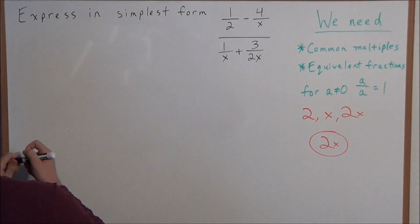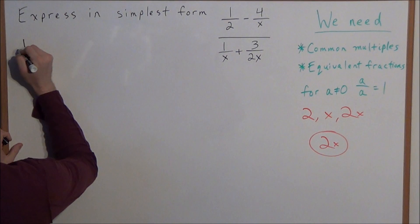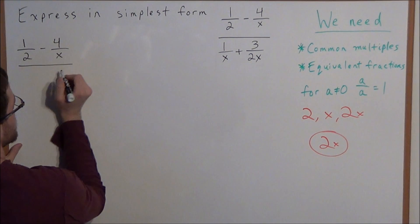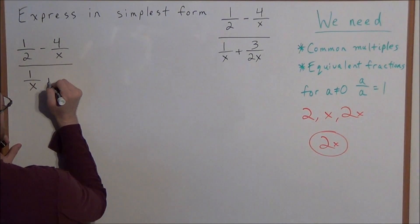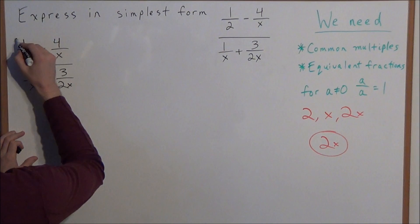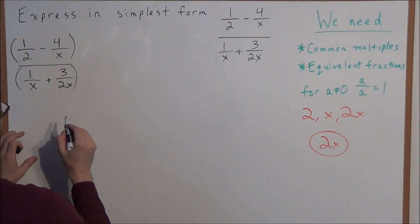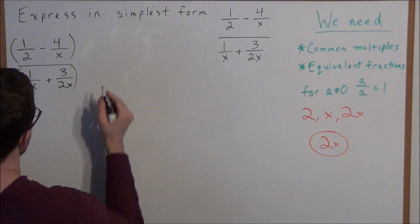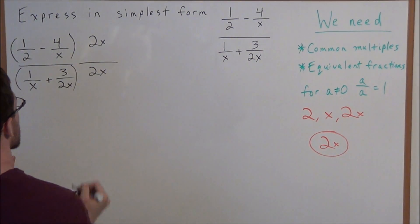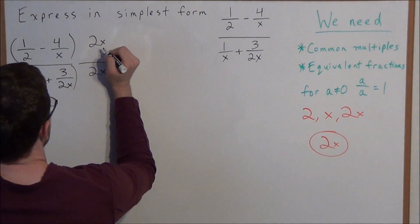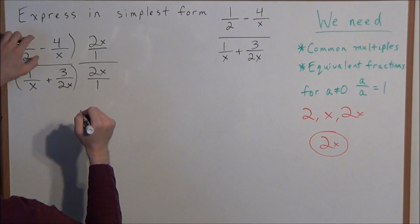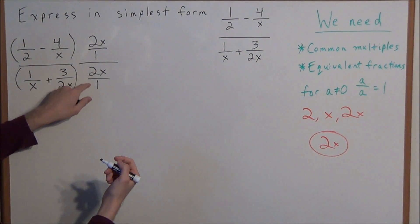So now let's look at this fraction. We have 1 over 2 minus 4 over x divided by 1 over x plus 3 over 2x. And now what we want to do is multiply the numerator and denominator by 2x. So I'm going to put parentheses because we're multiplying the entire numerator and the entire denominator by 2x. So we have 2x in the numerator, 2x in the denominator. And next I want to go ahead and look at this as 2x over 1, because it's easy to multiply a fraction by a fraction. And I'm going to do the same thing here, 2x over 1.